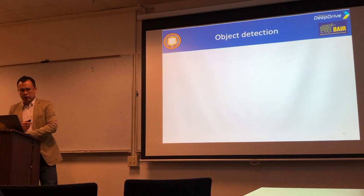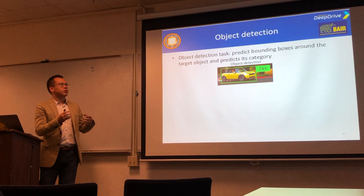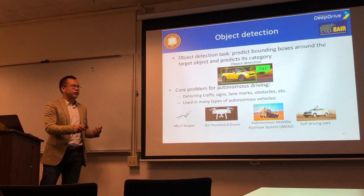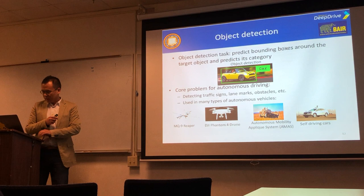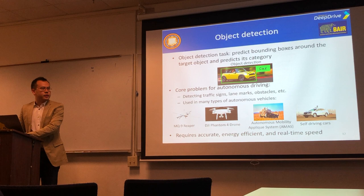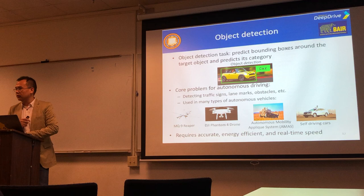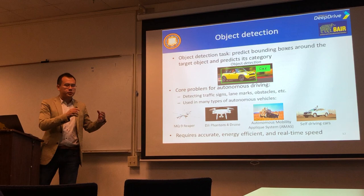Object detection is a fundamental computer vision task. Given an input image, we want to locate an object of interest by drawing a bounding box around it and predicting its category — whether it's a car or pedestrian. It is a core problem for autonomous driving and other applications, requiring very accurate, energy-efficient, and real-time speed. Those pictures show different types of autonomous vehicles — object detection is definitely used widely today.